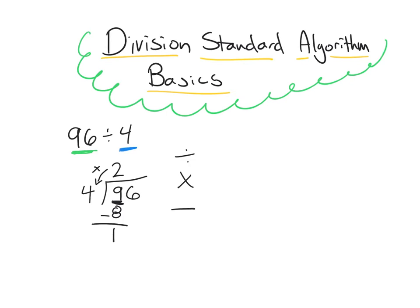The last step is we are going to bring down the next place value. We're going to bring down the ones place and write it next to this 1 that we had left over. Now we're going to start this process over again from the top with dividing. Except this time we're going to use the full number 16 to divide. So we ask ourselves: how many groups of 4 can we make with 16, or what is 16 divided by 4?